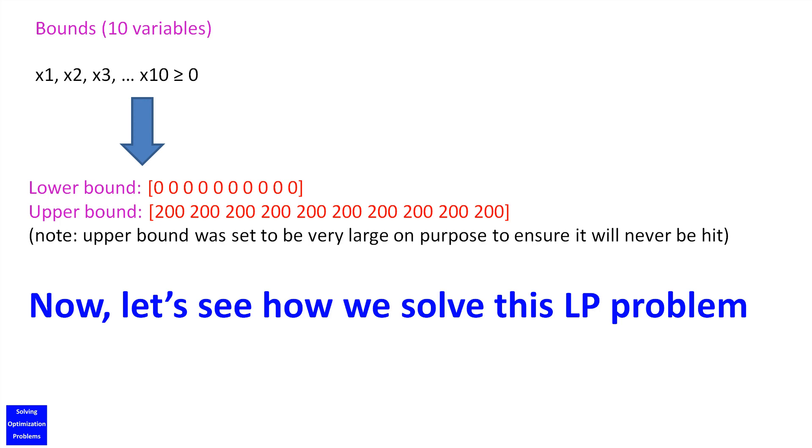And finally, here are the details of the lower and upper bounds of the 10 decision variables.